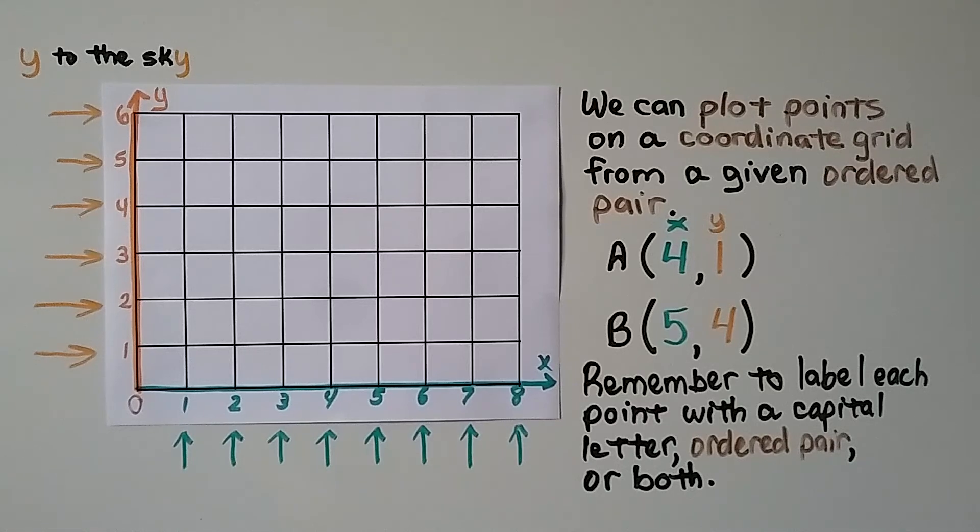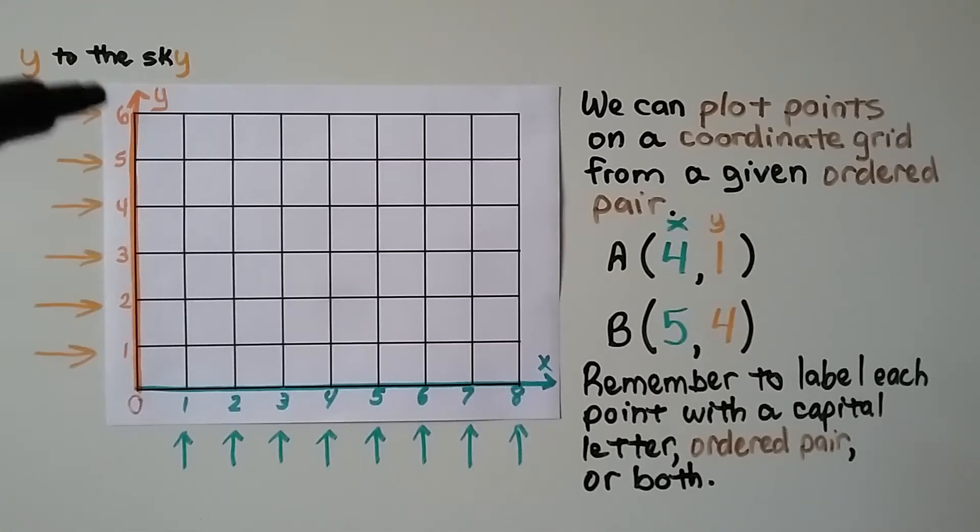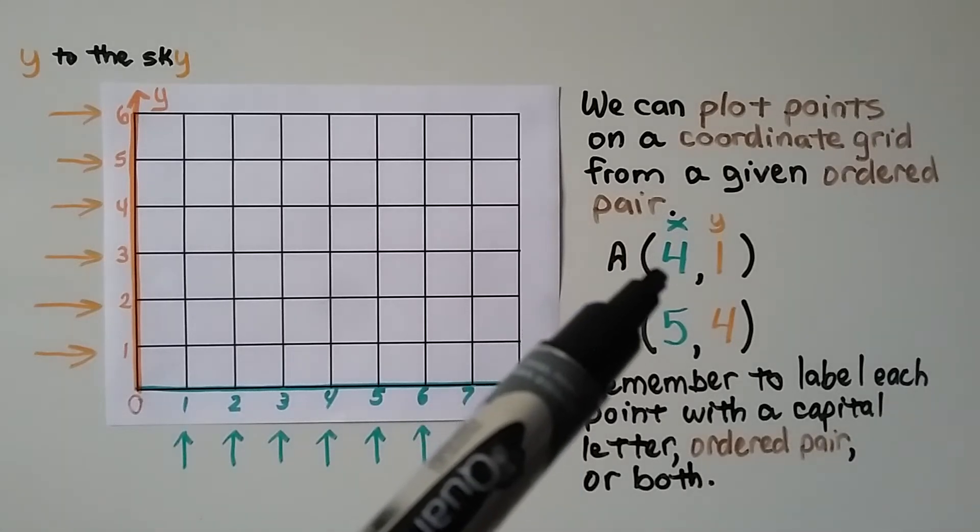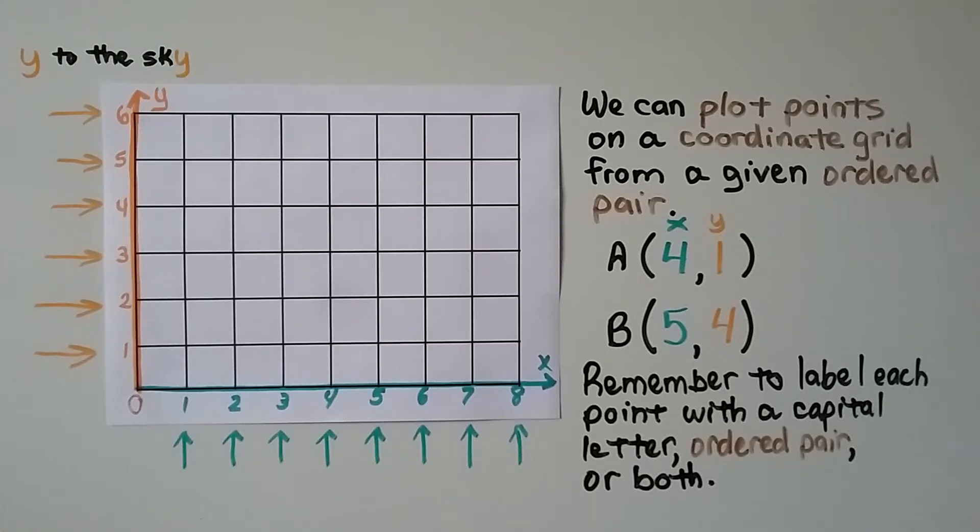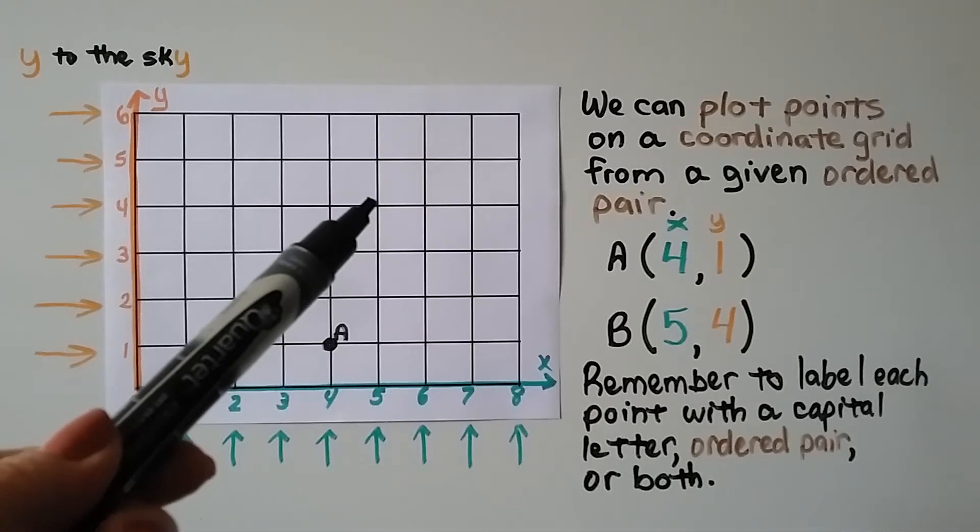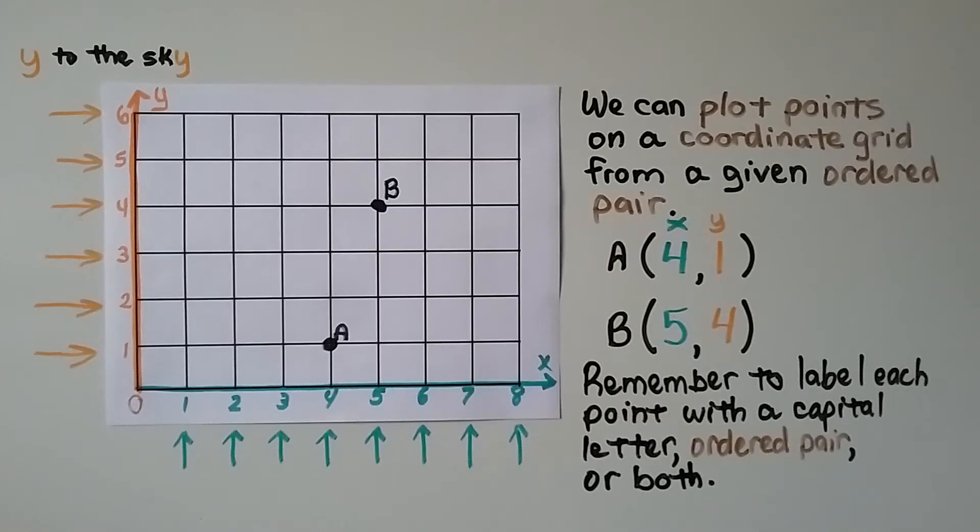We can plot points on a coordinate grid from a given ordered pair. Point A should be at 4 for x and 1 for y. It should go right here, 4 for x and 1 for y. We can plot the point and label it with a capital A. Point B should be at 5 for x and 4 for y. Remember to label each point with a capital letter, an ordered pair, or both.